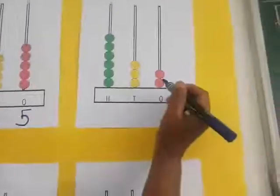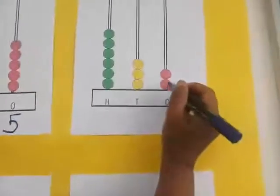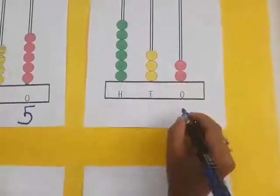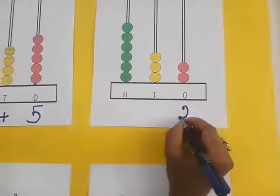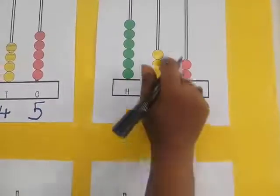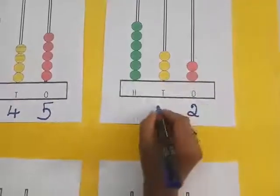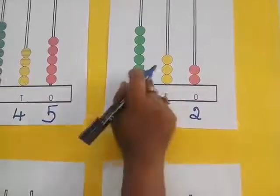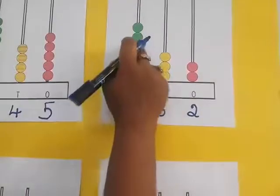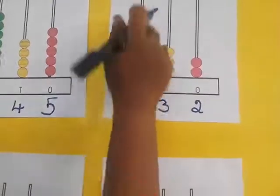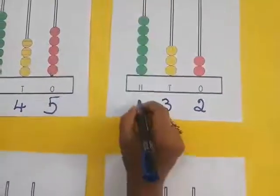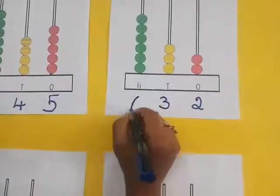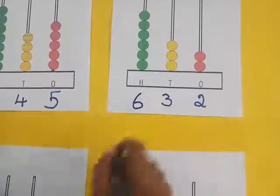The next one, if you see the same thing: 1, 2 in one's place; 3 in tenth place; 1, 2, 3, 4, 5, 6 — 6 in hundred place.